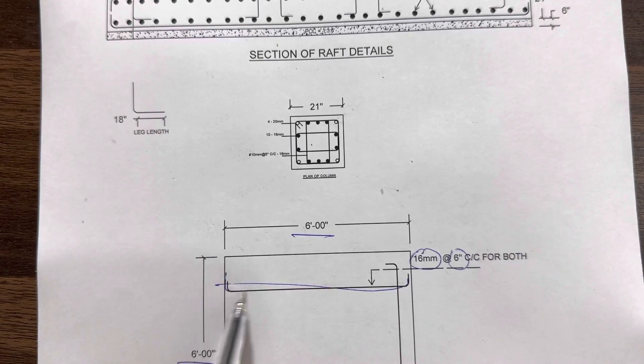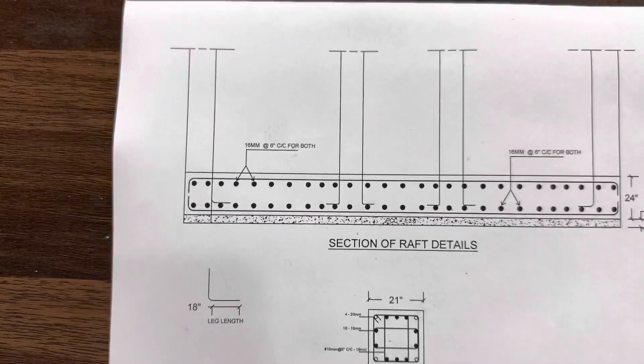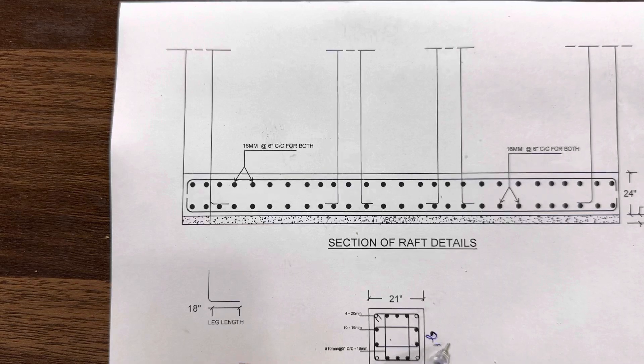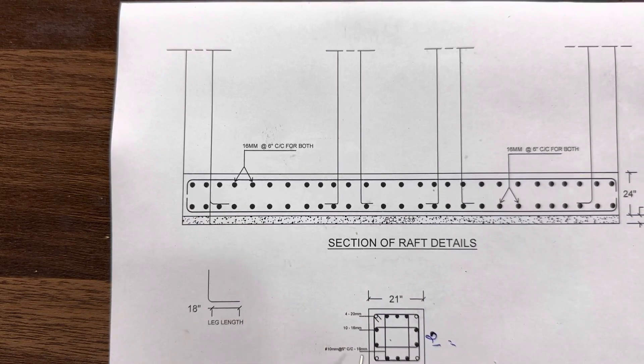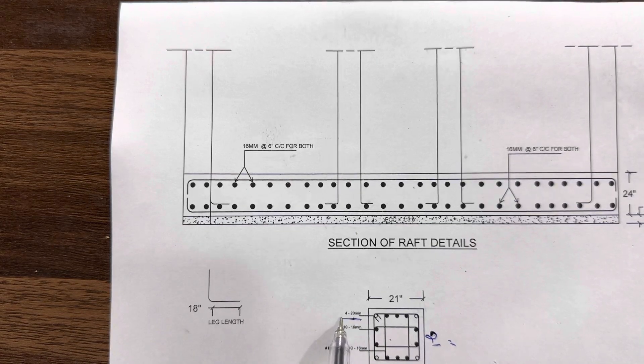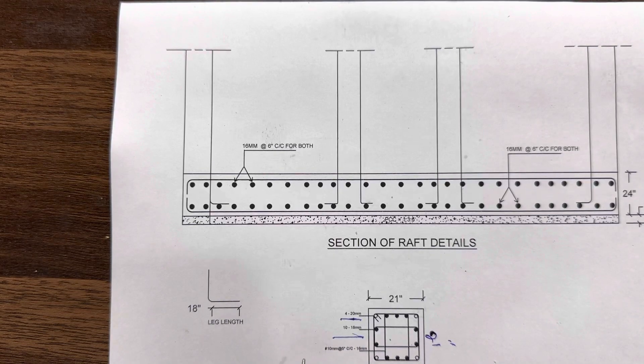This is the main bar and this is the distribution bar. Now let me guide you for the column size, which is 21 inches by 21 inches. Inside this, we have 14 numbers of steel rods: four rods with diameter 20 millimeter, and the other 10 rods with diameter 16 millimeter. The lateral tie diameter is 10 millimeter with spacing of 5 inches.